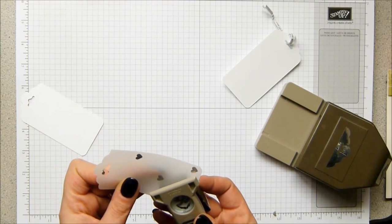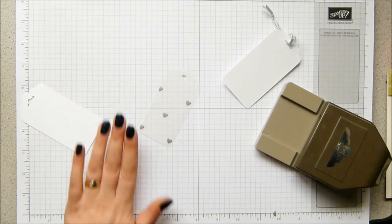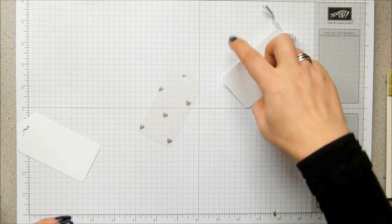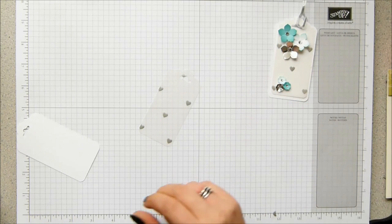And then you get your corner rounder and just round off the bottoms. And I'm going to show you in a second how to mount vellum without seeing anything. So I'm actually not stamping with this. I'm just using the punches.